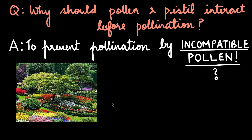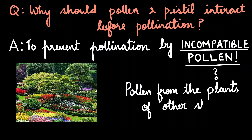In the first scenario, imagine we have a garden with many flowering plants, all with their own pollens undergoing pollination. If the pollen from one species falls onto the stigma of another flower, the rule in nature is that reproduction and pollination between two different species are not supported. So that pollen could be considered incompatible.